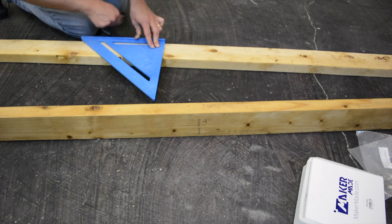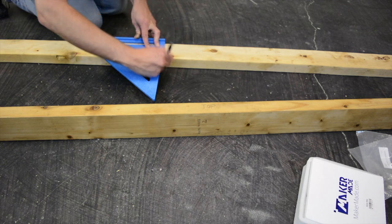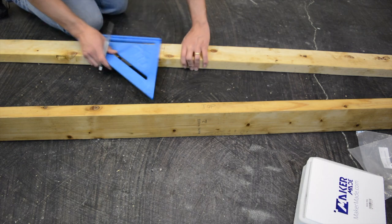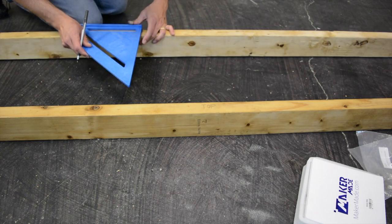Now on our top beam, we're going to go ahead and extend that line up to the top because it's easier to measure from that center line if you use the speed square to extend it to the top.